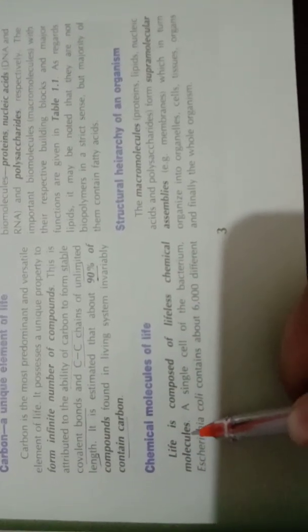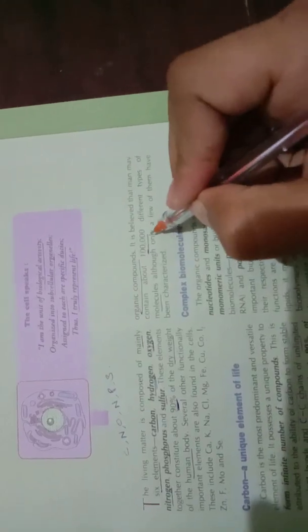It is estimated that 90% of the compounds found in living systems contain carbon. Life is composed of lifeless chemical molecules. A single cell of bacteria like E. coli contains 6,000 different organic compounds. It is believed that humans may contain about one million different types of molecules, though only a few of them have been characterized.